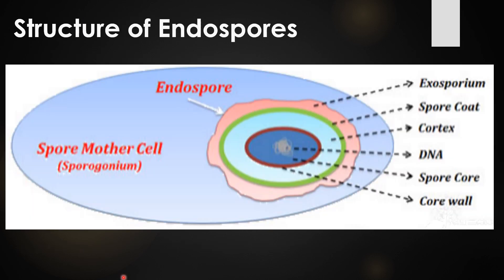The structure of the endospore is very complex because of the presence of multiple layers, and the whole region is the spore mother cell. The structure of the endospore is very complex because of the presence of its multi-layer covering. The outermost layer is the exosporium.